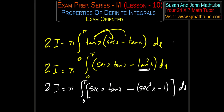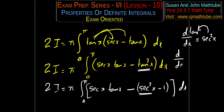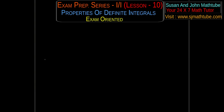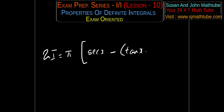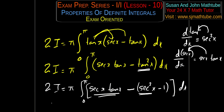A few quick questions: what is the derivative of tan x? It's sec²x — so the integral of sec²x is tan x. What is the derivative of sec x? It's sec x·tan x — so the integral of sec x·tan x is sec x. Now we're ready for integration. So: 2I equals π times [sec x minus tan x minus x] evaluated from 0 to π.